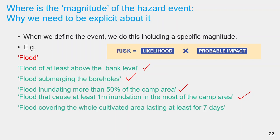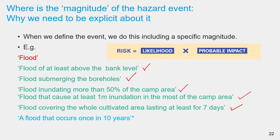'Flood covering the whole cultivated area lasting at least 7 days' — for agriculture, the duration of the flood is more important to assess the damage than the exact level of inundation, so here we use duration as our magnitude statement. Here is a different one: 'a flood that occurs once in 10 years.' In engineering, we often relate magnitude to frequency or likelihood. A once-in-100-years flood has a certain magnitude or flood height, and a 1-in-10-year flood has a smaller magnitude. This is why we just have likelihood in our risk equation — it implicitly specifies a magnitude in most cases.